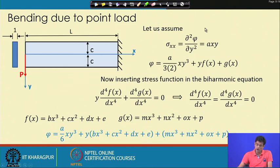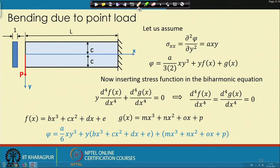To solve this problem, we consider the stress function such that σxx = a·xy. The reasoning is that the moment at any cross-section of this cantilever beam at a point varies along x as P·x.